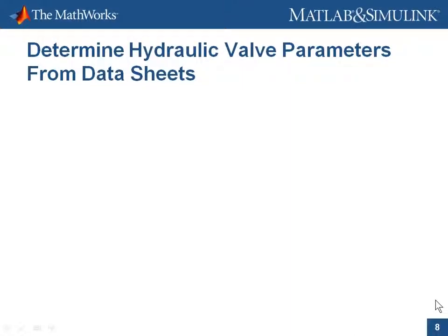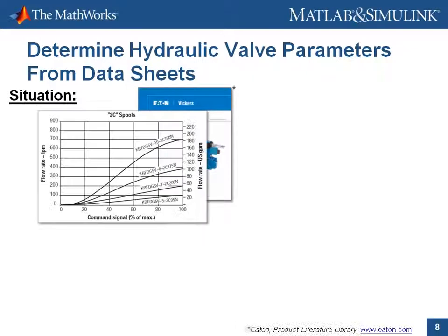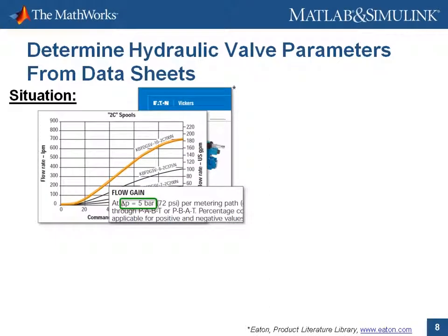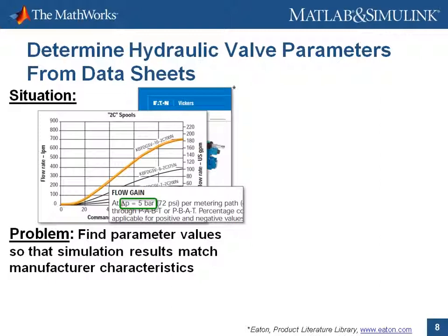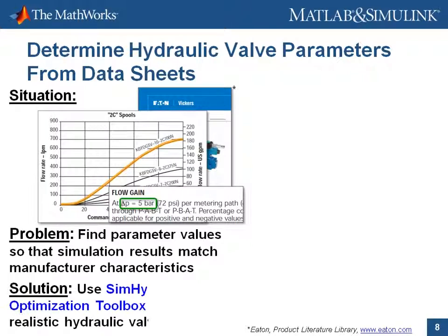In this demonstration, we're going to show how you can use optimization algorithms to determine hydraulic valve parameters from data sheets. We have a hydraulic data sheet that shows a series of flow characteristics. These curves represent the relationship between the control signal applied to the hydraulic valve and the flow rate through the valve. From the data sheet, we can also see that a pressure differential of 5 bar was maintained across the metering path. Using this information, we need to set up a model so that we can determine parameter values that will enable the simulation results to match this manufacturer characteristic. We're going to use SimHydraulics and the Optimization Toolbox to do that.